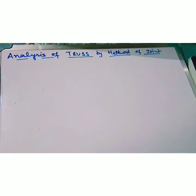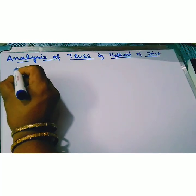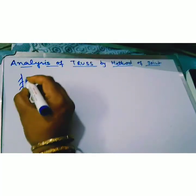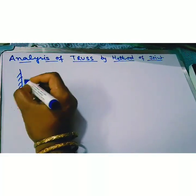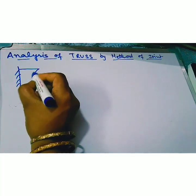Another problem by method of joint. A cantilever truss, the support condition one end fixed and another end free.